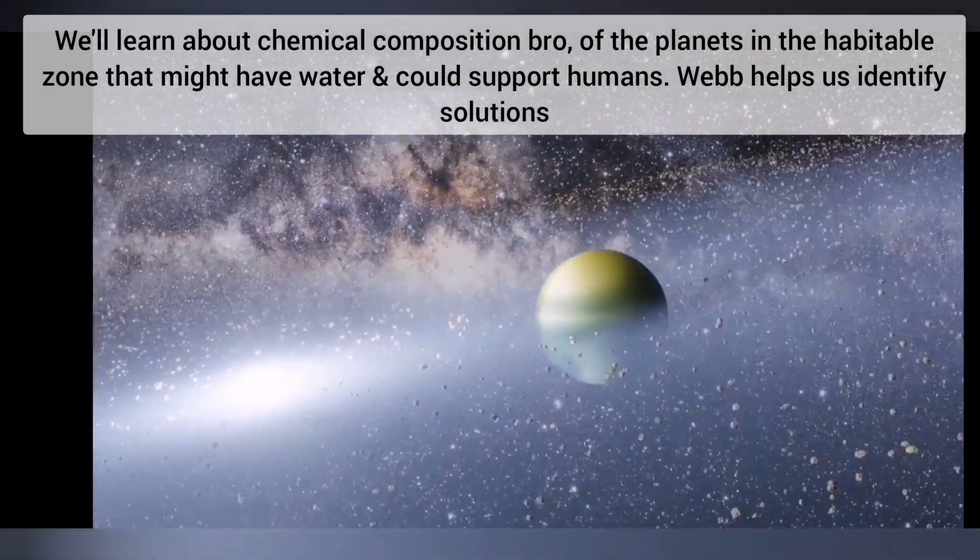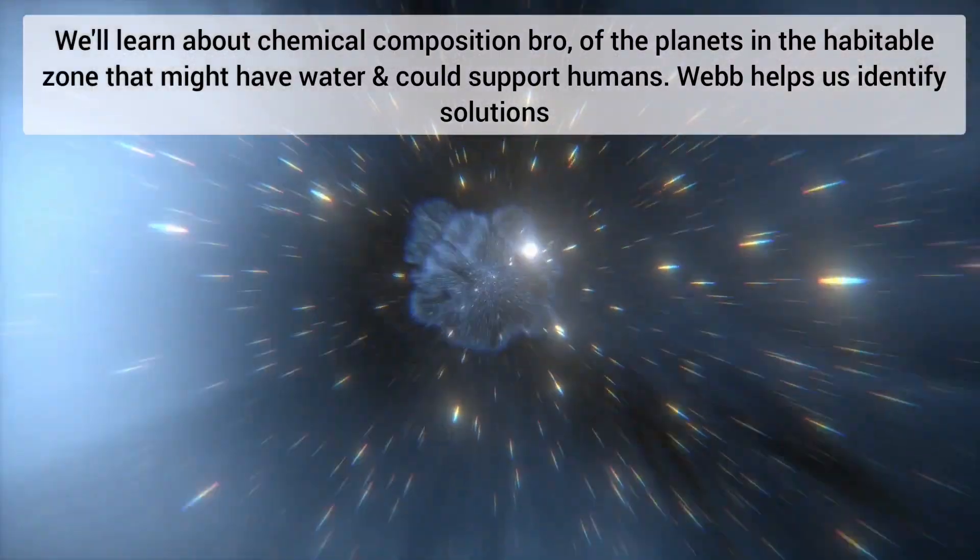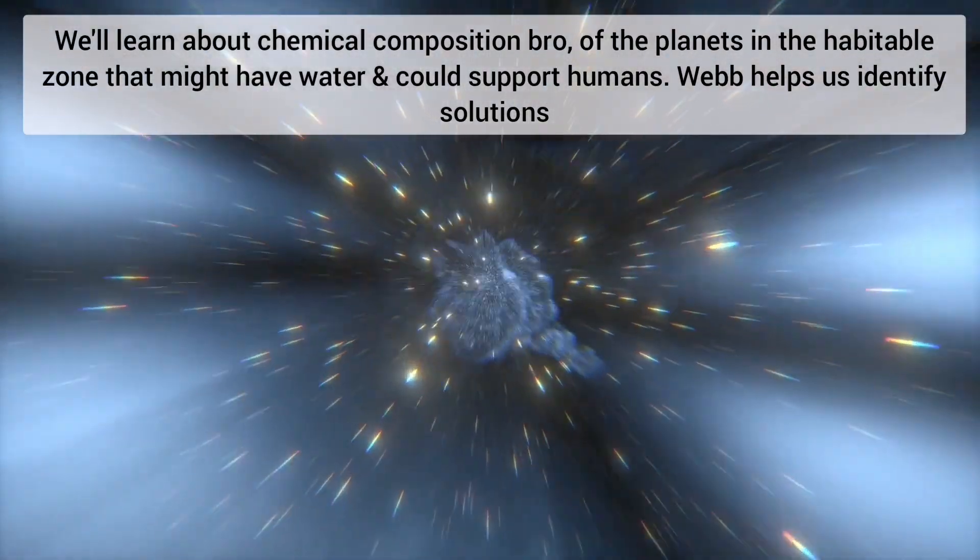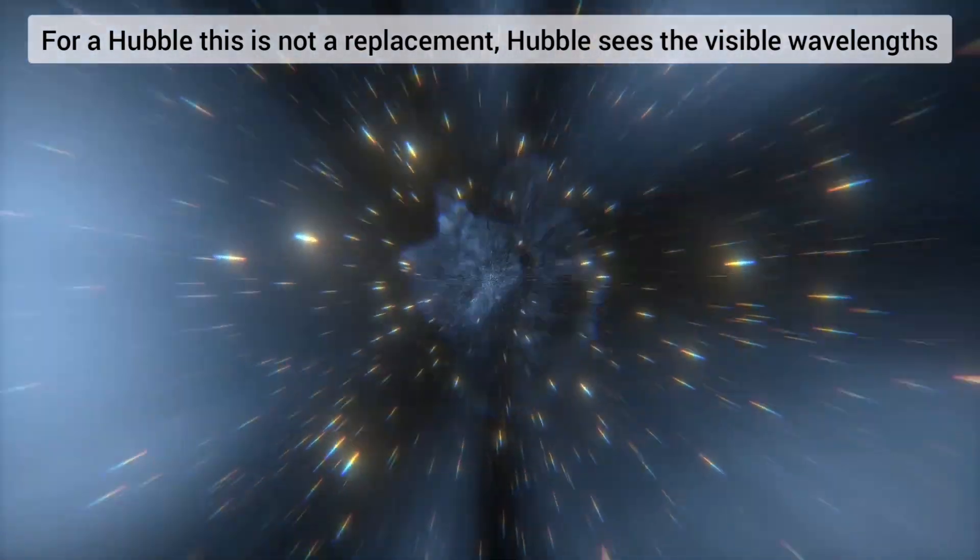We'll learn about chemical composition growth of the planets in the habitable zone that might have water and could support humans. Webb helps us identify solutions. For Hubble, this is not a replacement. Hubble sees the visible wavelengths.